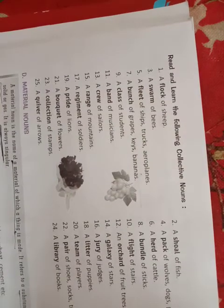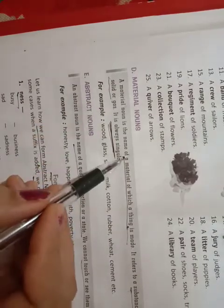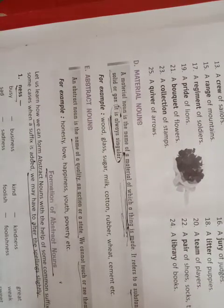Go through all these collective nouns. A material noun is the name of a material of which a thing is made. It refers to a substance which may be a liquid, solid, or gas, and it is always singular.